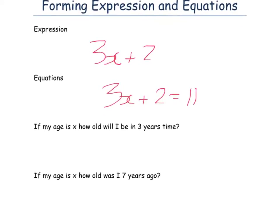So if we say my age is x, how old will I be in 3 years' time? We've got my current age, which is x, and the words 3 more years, or how old will I be in 3 years' time, means we're adding on 3 extra years. So we've got my current age of x, and we're adding on 3.